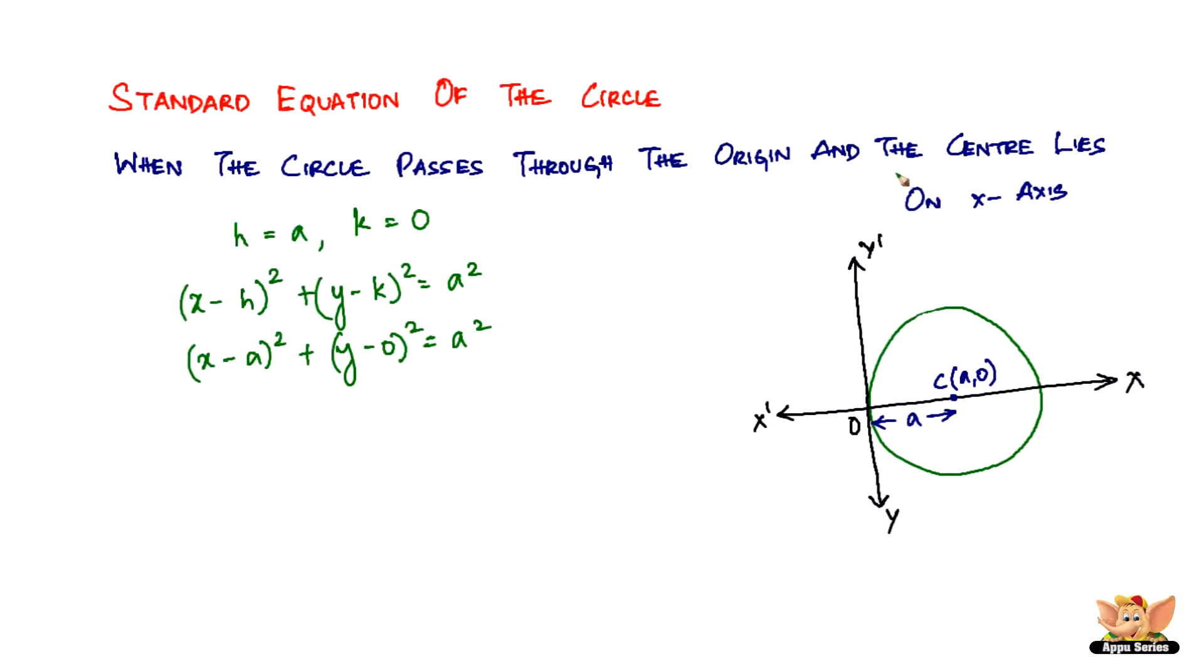So the standard equation of the circle, when the circle passes through the origin and the center lies on the x-axis, will become something like this: x square, plus A square, minus 2Ax, plus y square, equal to A square. A square, A square gets cancelled. So we have x square, plus y square, minus 2Ax, equal to 0. So this is what the equation of the circle becomes when it meets this condition.